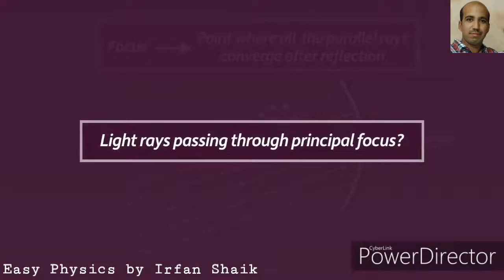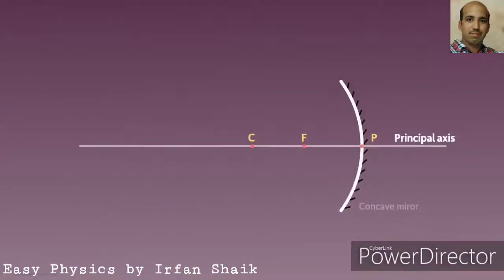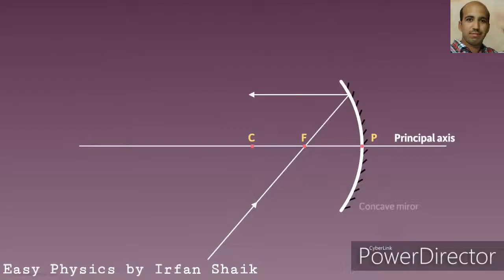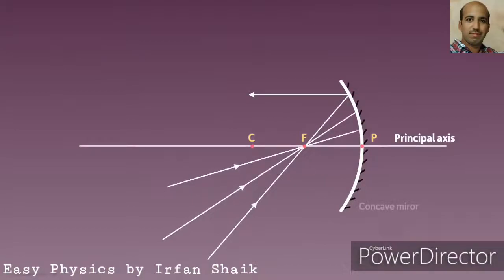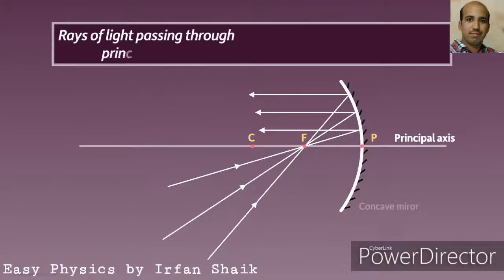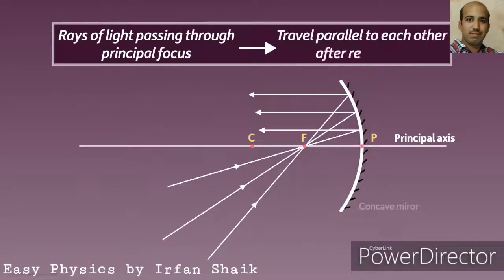Now let us understand what happens when a light ray passes through the principal focus. Taking a single light ray passing through the principal focus — after reflection, it travels parallel to the principal axis. Taking two more light rays passing through the principal focus — after reflection, they also travel parallel to the principal axis. We can conclude that light rays passing through the principal focus, after reflection, travel parallel to each other.